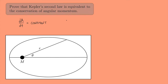What about the conservation of angular momentum? Well, that says that L, angular momentum, is a constant. We're talking about the angular momentum of our planet as it's orbiting around the Sun. And if these two are equivalent, then they should be saying the same thing — and that's what I want to prove.